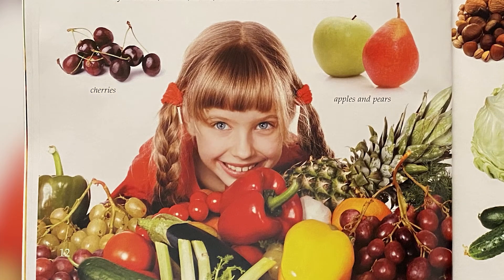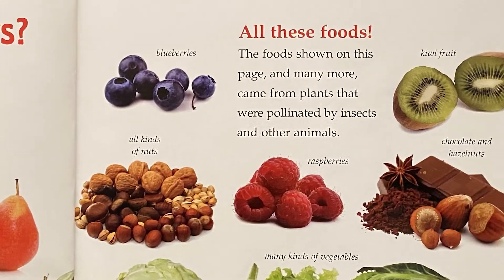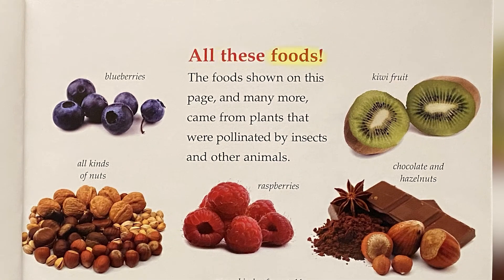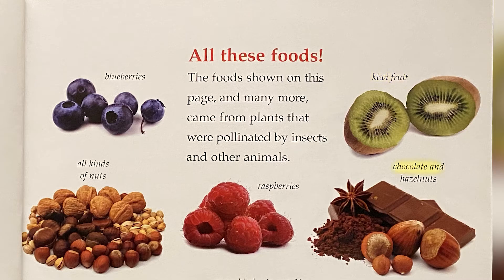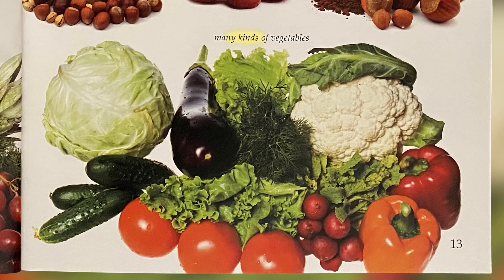Cherries, apples and pears, blueberries, all kinds of nuts, raspberries, kiwifruit, chocolate and hazelnuts, and many kinds of vegetables — all these foods and many more came from plants that were pollinated by insects and other animals.